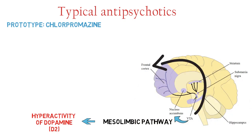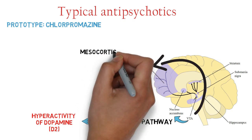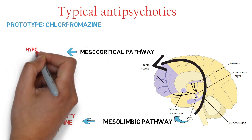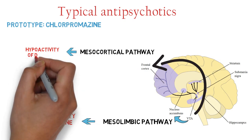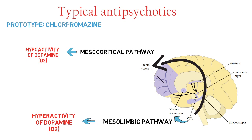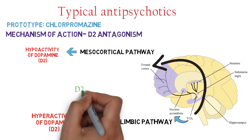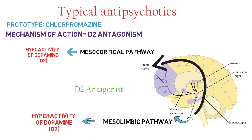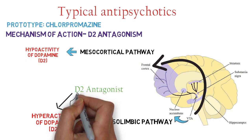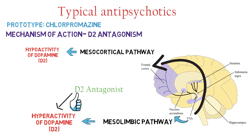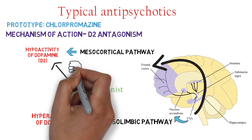The second pathway is the mesocortical pathway, which originates from the VTA and terminates in the frontal cortex. Hyperactivity of dopamine here results in negative symptoms because the mesocortical pathway regulates attention and decision making. If we administer D2 blockers, they act on the mesolimbic hyperactivity and improve positive symptoms. However, blocking D2 receptors in the mesocortical pathway worsens the condition or produces insignificant results, because there is already hypoactivity of dopamine in that pathway.